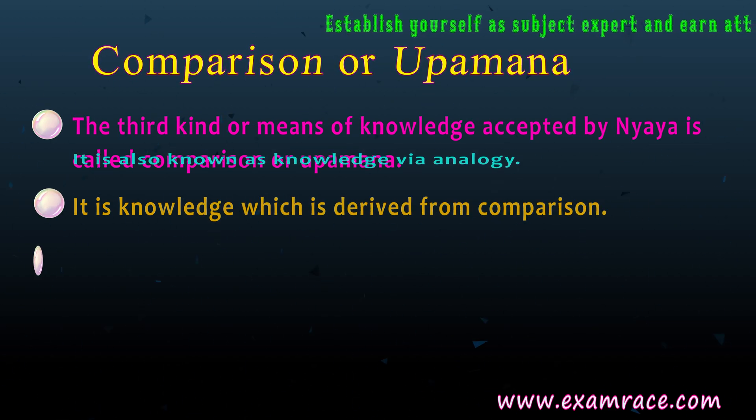2. Yogita — the word must contain in itself the power or potency to convey the sense and should not contradict the meaning. For example, a sentence such as 'Water the plants with fire' is a nonsensical sentence. 3. Saniddhi — it means the condition of closeness or proximity within the words. The words of the sentence must be spoken with close intervals and there should be no long pauses between the words in a sentence, otherwise the sentence will make no logical sense.